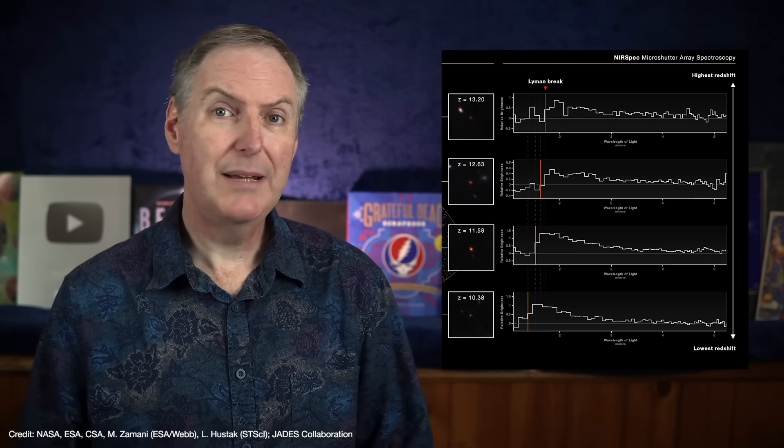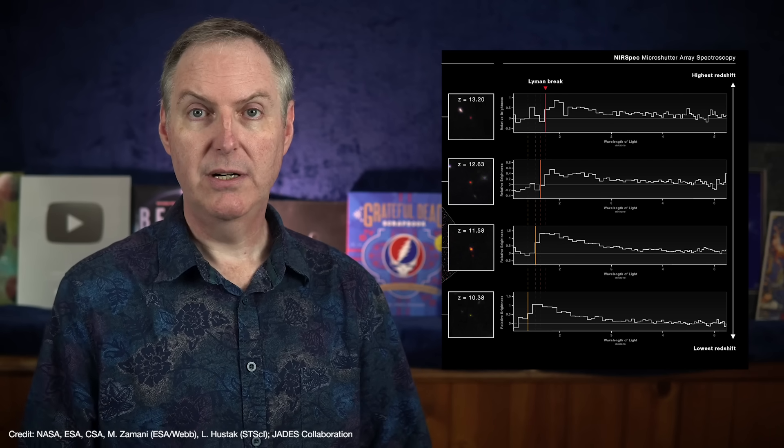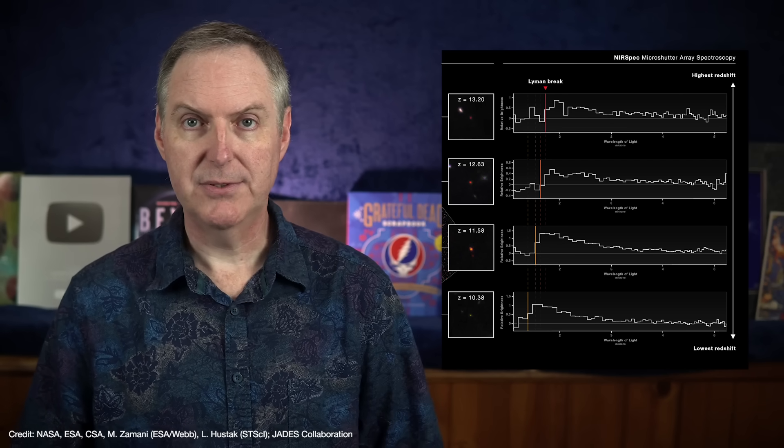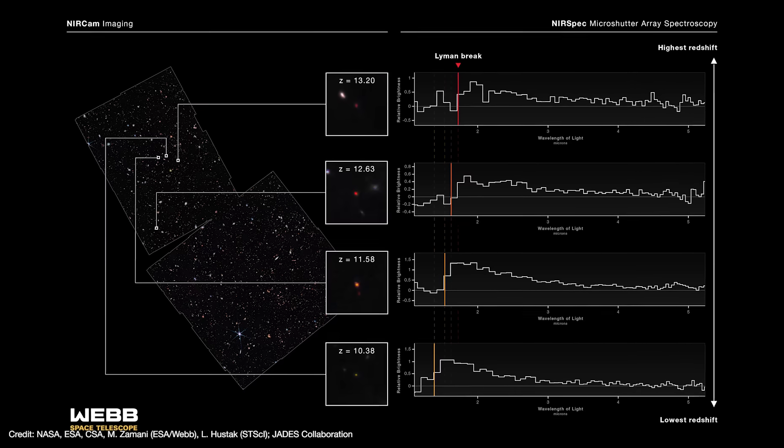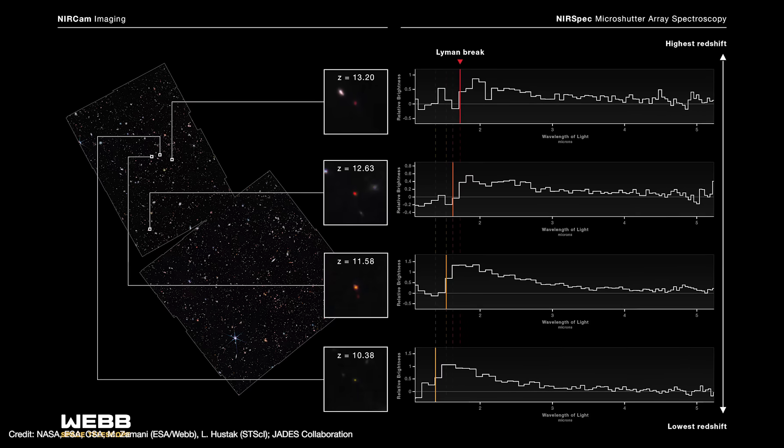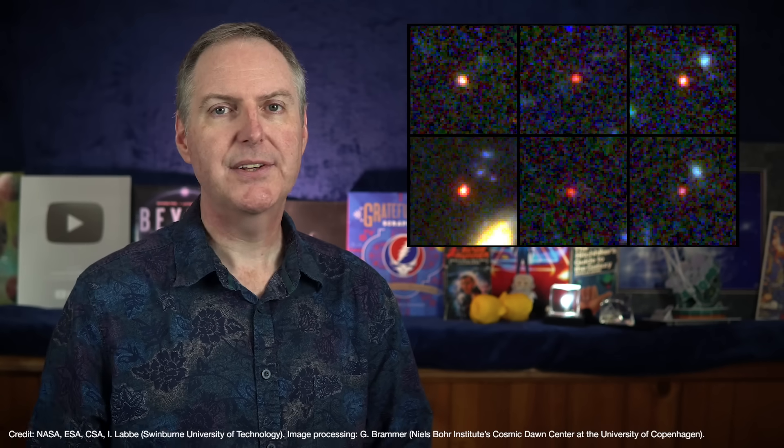You might wonder then, well, why bother with this imaging approach at all if it's going to give us wrong answers? Why don't we just take the spectra to begin with and be done with it? Well, the answer is simple. You need the imaging to figure out which galaxies to take a spectrum of. I suspect that as we gain more spectra of these early galaxies,